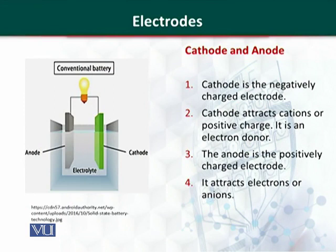Cathode is an electron donor, but anode is an electron acceptor. Anode and cathode are associated with oxidation and reduction processes. This reaction occurs on the surface of the electrode. Reactive electrodes undergo redox reactions, whereas inert electrodes do not.